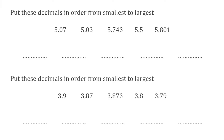For this first example we're going to do just like we did before — make sure they're all to the same amount of decimal places. The most decimal places we go to is 3, so we're going to do that for each one. So we've got 5.070, 5.030, 5.743 which is fine, 5.500, and 5.801. Looking at the first digit for all of these, they're all going to be 5. Moving on to the second digit, we've got 0, 0, 7, 5, 8. So we've got two 0s, so we're going to focus on those first two numbers.